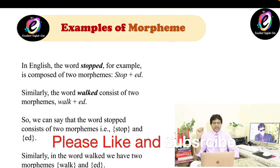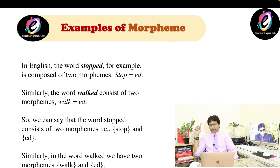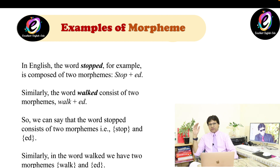Look at these examples. In English, the word 'stopped' is composed of two morphemes: stop plus -ed. Similarly, the word 'walked' consists of two morphemes: walk plus -ed. So 'stopped' has morphemes stop and -ed, and 'walked' has morphemes walk and -ed.